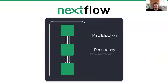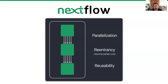We also have reentrancy. With Nextflow, you can use a resume flag which allows you to re-enter a pipeline at a particular stage. If your pipeline has failed or you want to tweak something halfway through, using reentrancy you can jump back into the pipeline at the part that either failed or that you have edited, meaning you don't need to rerun the entire pipeline. This is really important for bioinformatics where processes can take a long time and a lot of compute.